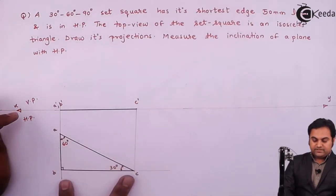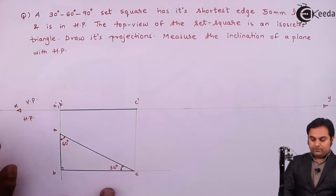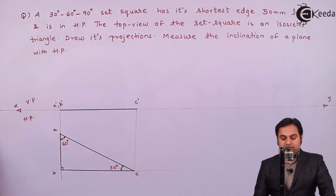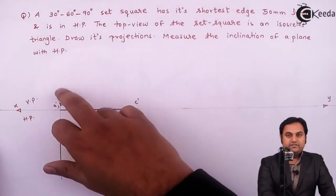Means side AB and BC, they should be equal. So for that, the inclination is not given. In the question, they have said measure the inclination of the plane with HP.